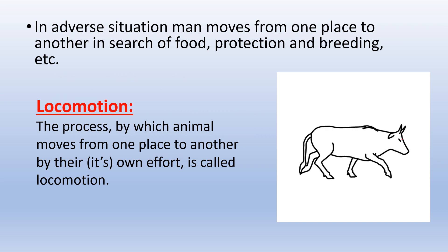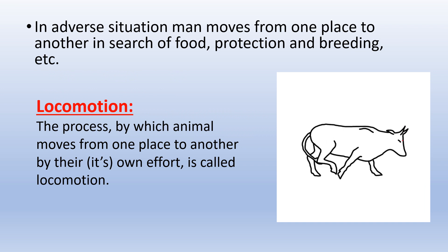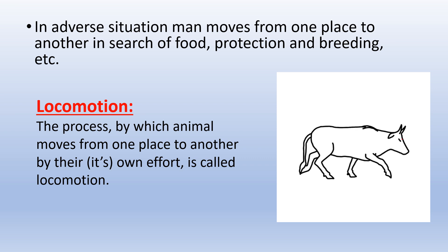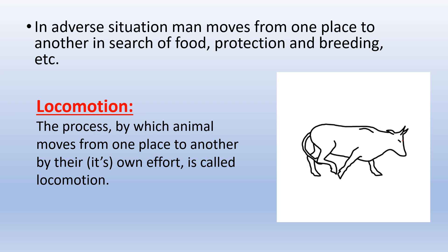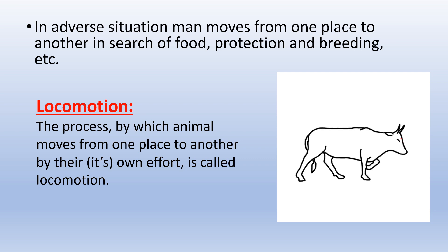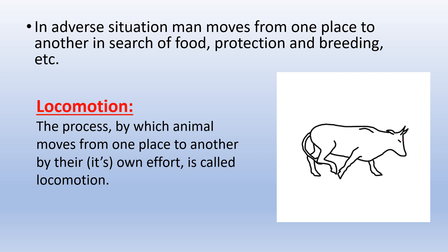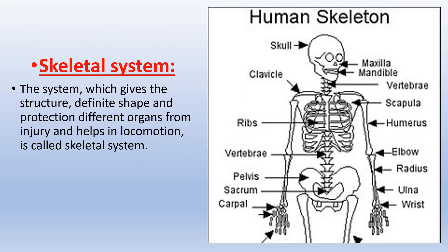In adverse situations, man moves from one place to another in search of food, protection, and breeding. The process by which an animal moves from one place to another by its own effort is called Locomotion. The system which gives the structure, definite shape, and protection to different organs from injury and helps in locomotion is called the Skeletal System.